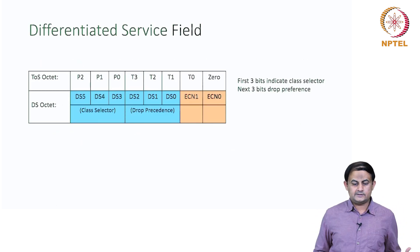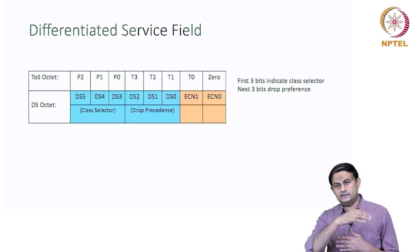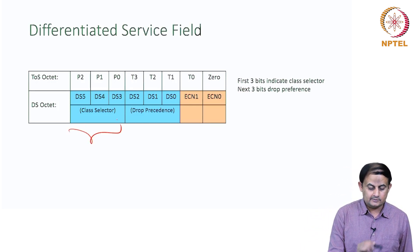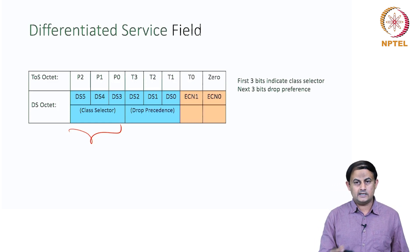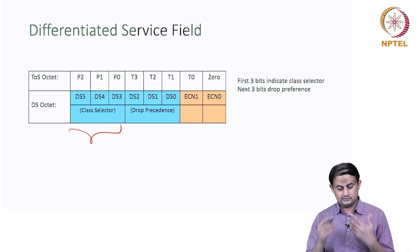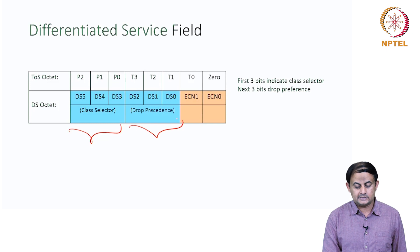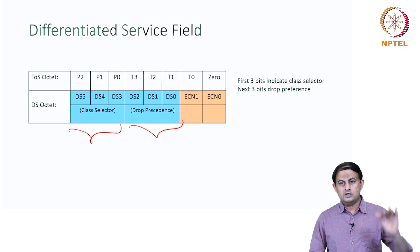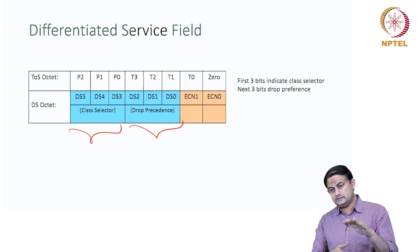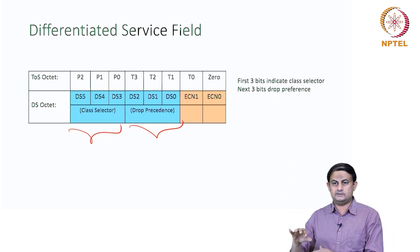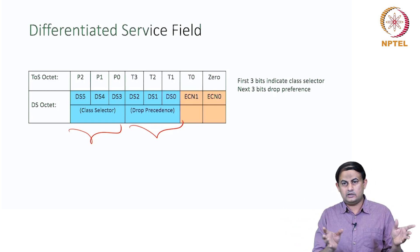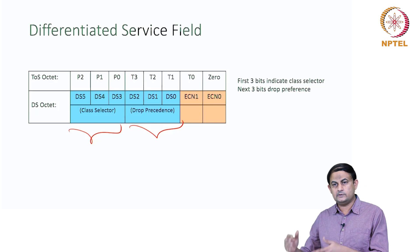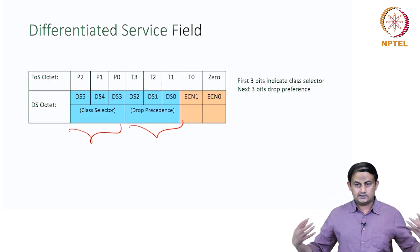In the differentiated service model, the eight bits of the type of service field take the following meaning. The first three bits indicate the class selector — they identify a particular class of traffic. The remaining three bits indicate the precedence with which the packet is dropped. So there are multiple dropping preferences within a class. For example, hypothetically, if there are two classes, in class one you might have one, two, three, four kinds of dropping preferences, and in class two as well.